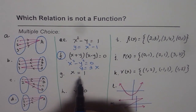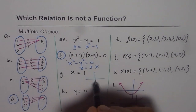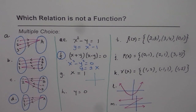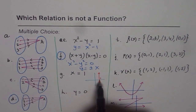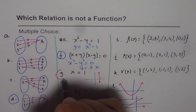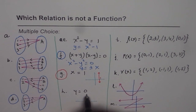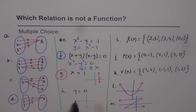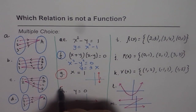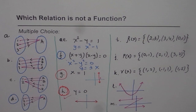For x = 1, if you graph this you get a vertical line at x = 1. It fails the vertical line test, so this is not a function. For y = 0, that means for every value of x, y is 0 — it is a horizontal line, the x-axis. It passes the vertical line test, so y = 0 is a function.